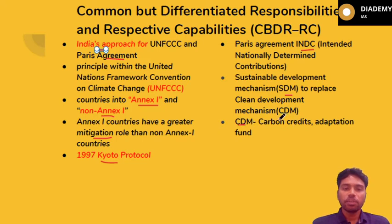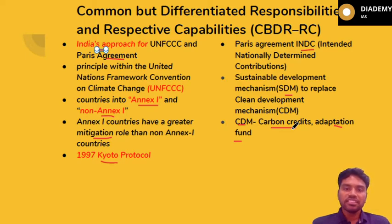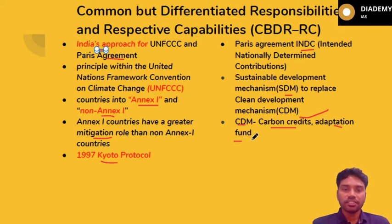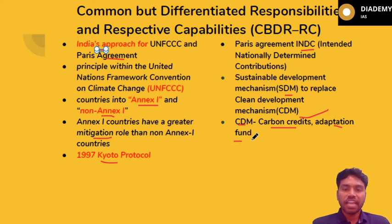Currently, the Clean Development Mechanism has carbon credits and an adaptation fund component. Carbon credits work such that developed countries, bearing their historical responsibility to reduce carbon footprints, exchange with greener projects in developing countries by buying carbon credits. The funds given to developing countries are used to promote green projects. Similarly, nearly two percent of these carbon credits go to the Adaptation Fund, which helps developing countries adapt to climate change, for example through sustainable or climate-resilient agriculture.